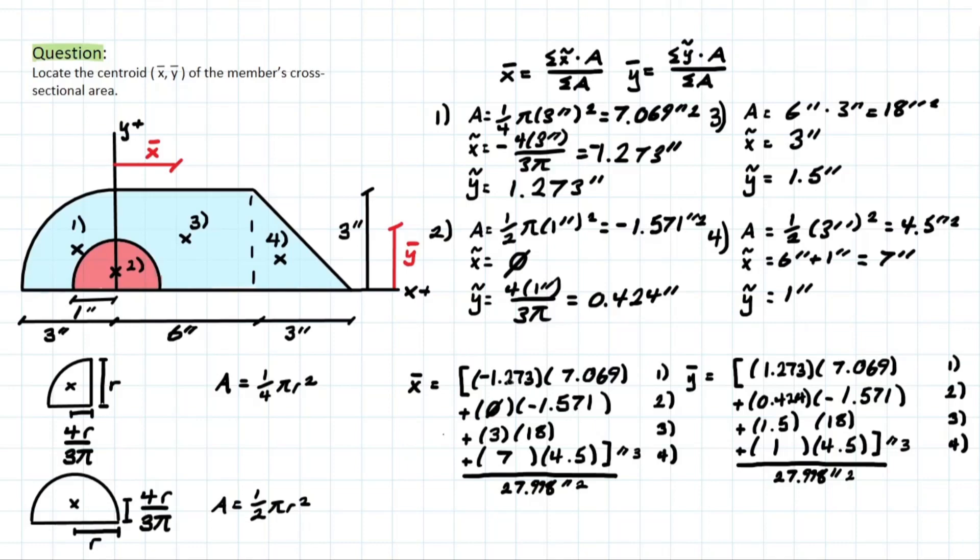For shape 1, you can see we have x tilde times the area for the quarter circle. Same with the semicircle, the rectangle, and the triangle. And we did the same for y bar as well, and we used all the values that we calculated previously. The only value that's different here is this area, which is the summation of all areas of this entire composite. So what we did was we took the area of 1 plus the area of 2 plus the area of 3 plus the area of 4. The only note to make here is that we have a negative being added to that total area because we have a hole.